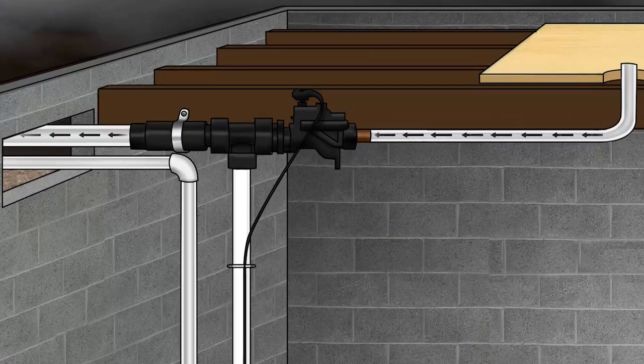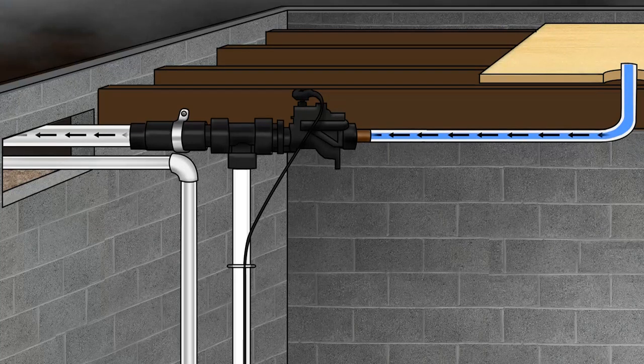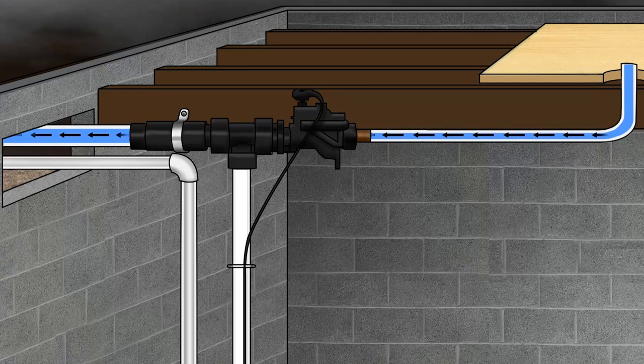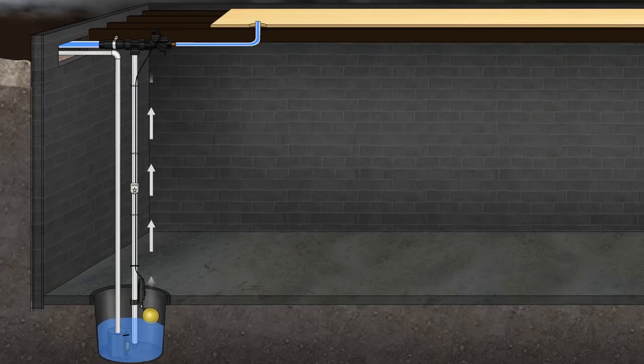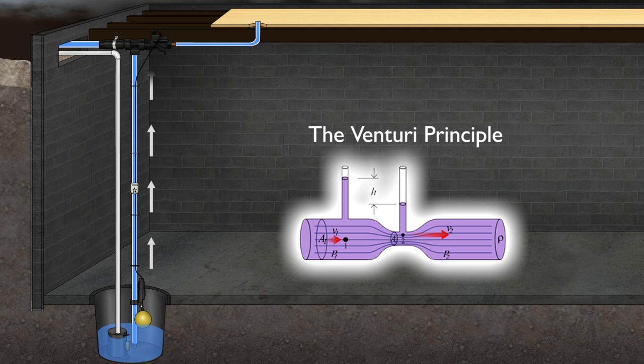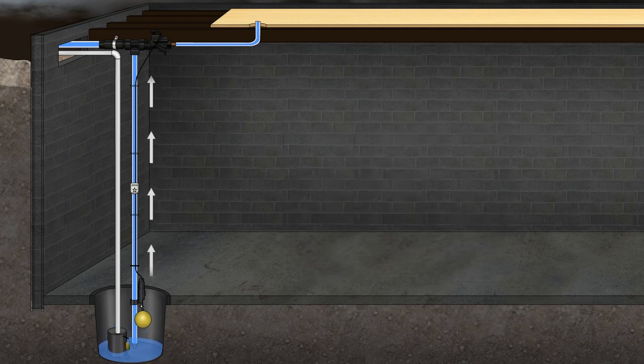This causes a valve to open, which sends water from your home's incoming municipal water supply through the pump ejector. This water discharges safely outdoors. But while it runs through the pump ejector, it creates powerful suction due to the Venturi principle, which sucks water out of your sump pit, discharging it outdoors just like your main pump would have.